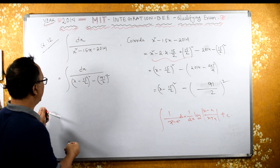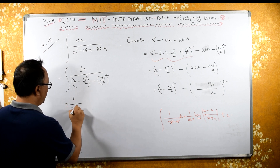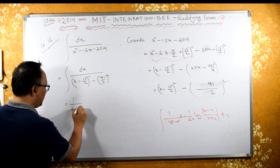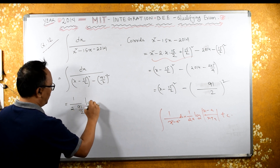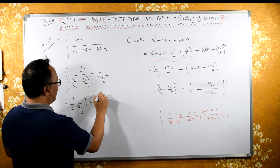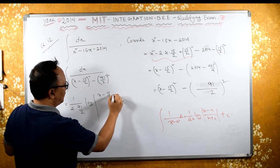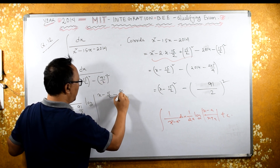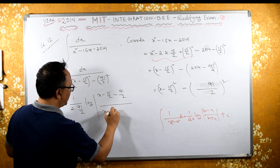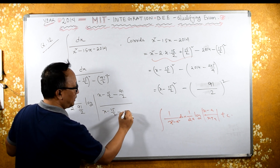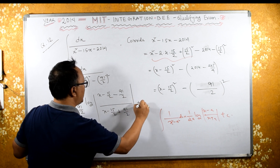We apply the formula: integral of 1 by x squared minus a squared dx equals 1 by 2a times log of x minus a upon x plus a, plus constant c. Over here, x is x minus 15 by 2 and a is 91 by 2. So this is 1 by 2a, meaning 1 over 2 times 91 by 2, times log of x minus 15 by 2 minus 91 by 2 upon x minus 15 by 2 plus 91 by 2, plus constant c.